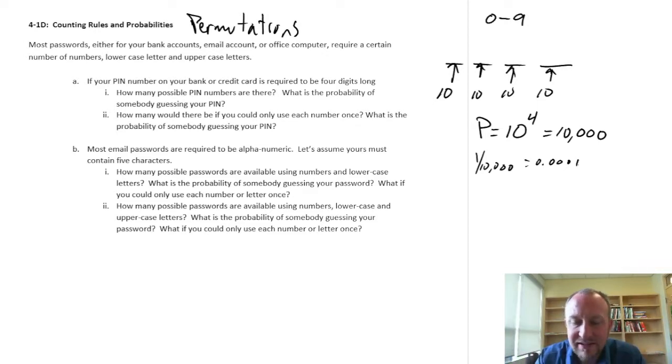Now, this is an example of a permutation, because the order here matters, right? If this is 5367, the numbers have to be specifically in that order to work. When you hear about the comparison between permutations and combinations, the big difference is that in combinations, the order doesn't matter. So, if pin numbers were based on combinations, or like, you know, we call them combination locks that we put on our locker, but really they should be called permutation locks, because the order of those numbers matters.